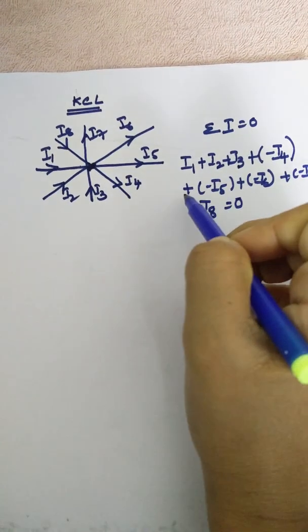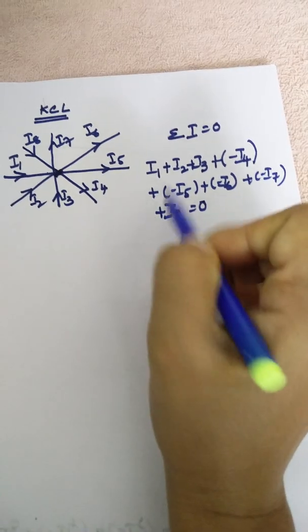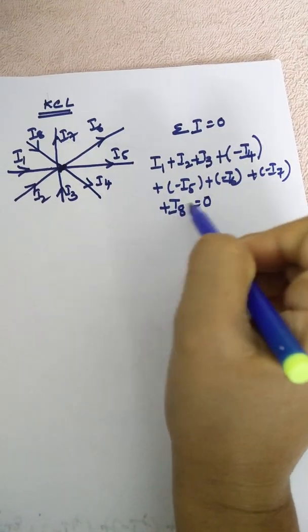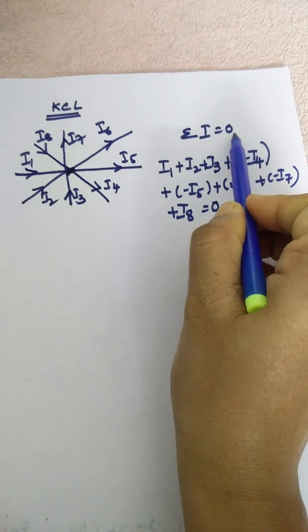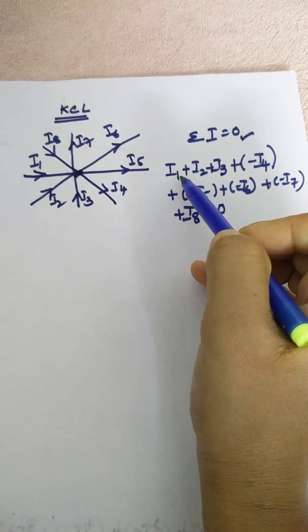Sum, algebraic sum of currents at a node is equal to zero. So this is how we define KCL.